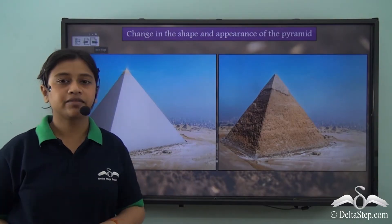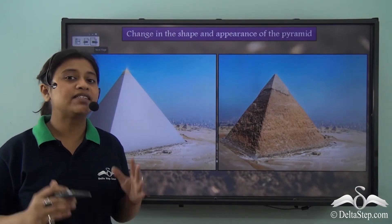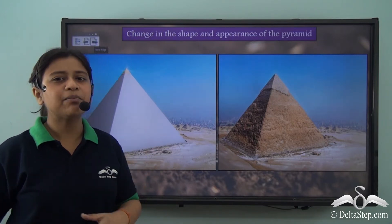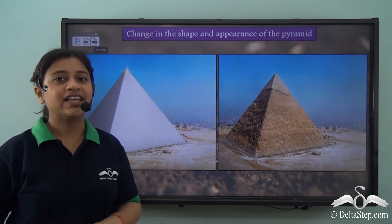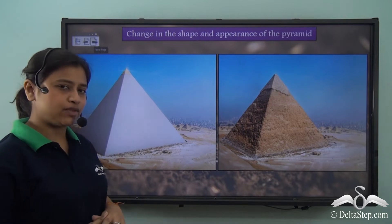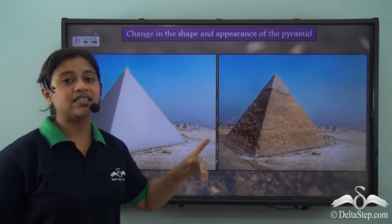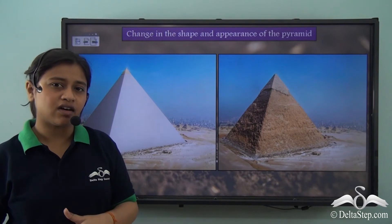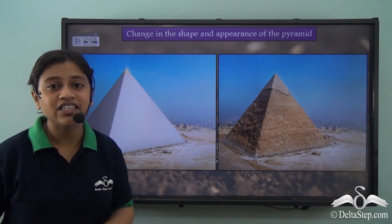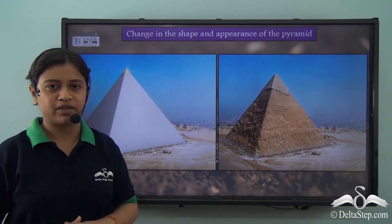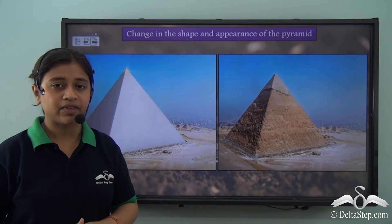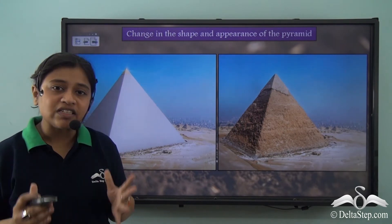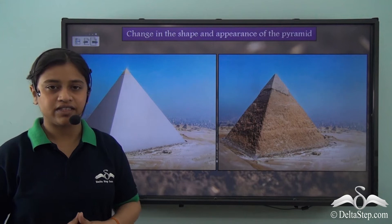So what do you see here? You will be surprised to know that these two images are of the same pyramid. What happened was this pyramid is the result of weathering over the years on the initial pyramid. We call this a result of physical or mechanical weathering.